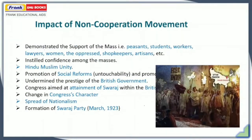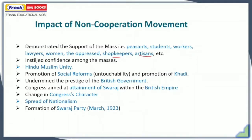The impact of the non-cooperation movement was significant. It demonstrated the support of the masses — peasants, students, workers, lawyers, women, the oppressed, shopkeepers, artisans, and others. It instilled confidence among the masses. Hindu-Muslim unity was also an impact. Promotion of social reforms, promotion of Khadi, and undermining the prestige of the British government also took place. The Congress aimed at attaining Swaraj within the British Empire. The character of Congress changed, the spread of nationalism occurred, and the formation of the Swaraj Party in March 1923 followed.